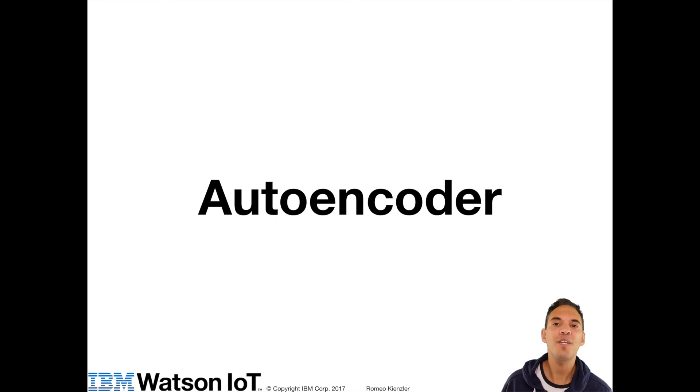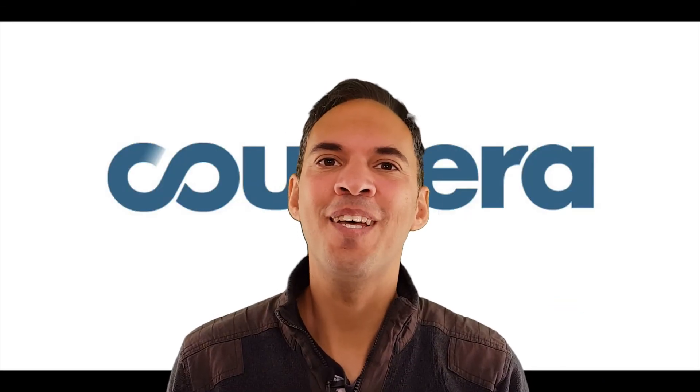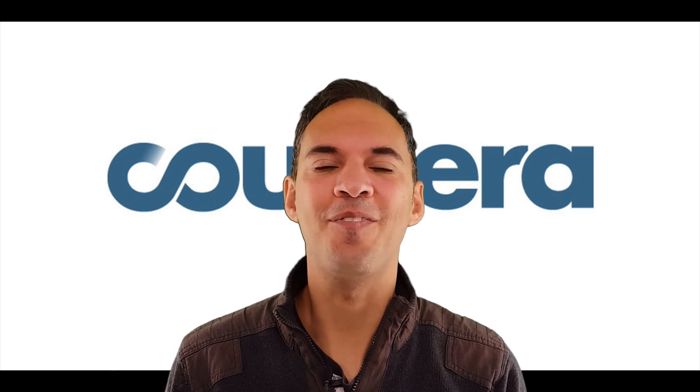Another exotic but totally exciting neural network topology is an autoencoder. So let's learn about it in the next lecture. Thanks a lot for watching and please don't forget to like, subscribe and share if you liked the video.